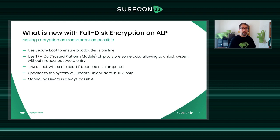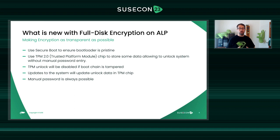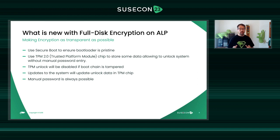This is not really convenient. With ALP, the Adaptable Linux Platform, we want to make encryption as transparent and easy as possible. For that, we are combining several technologies together. First, we use SecureBoot, a UEFI feature which ensures that the bootloader and the entire boot sequence is pristine, coming directly from SUSE and untampered. Second, we also use a Trusted Platform Module — TPM2 to be precise — a TPM2 chip to store data that will be used to unlock the system without having to enter the password manually. This TPM unlock will be disabled if somebody tries to tamper with the boot chain — either the bootloader, the kernel, etc.